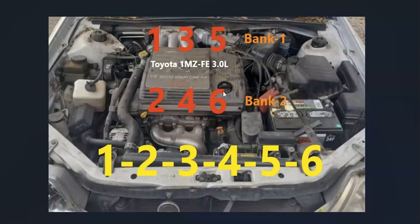But basically the cylinder locations, when you open up the hood, up against the firewall is going to be one, three, five. Directly in the front is going to be cylinders two, four, and six.